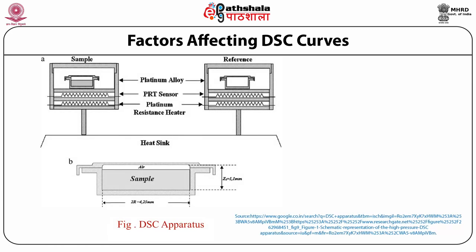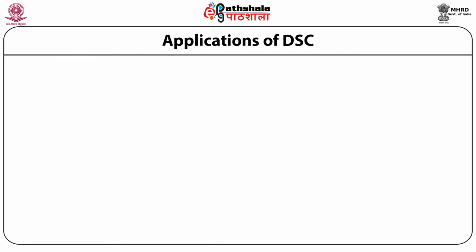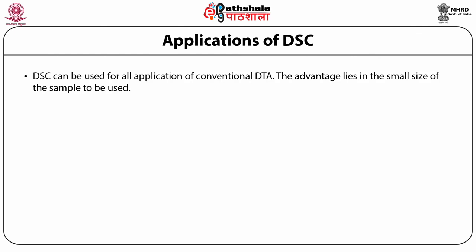With large samples, smaller heats of transitions may be measured with greater precision. In principle, like DTA, DSC involves the heating of the sample and an inert reference in parallel. DSC can be used for all applications of conventional DTA, with the advantage of the small sample size required in comparison to DTA. DSC essentially studies the same thermal phenomena as DTA, albeit using a different principle.